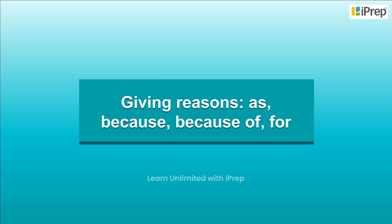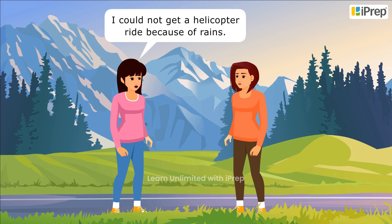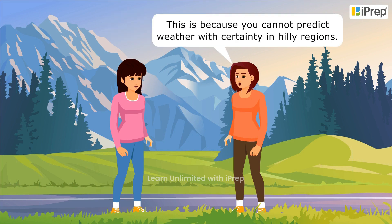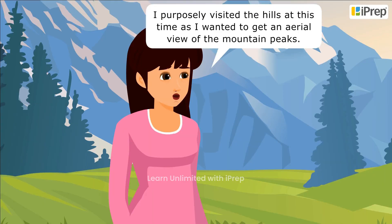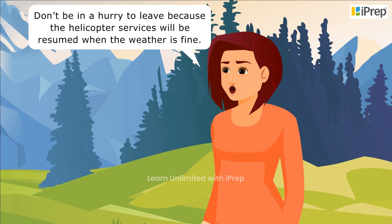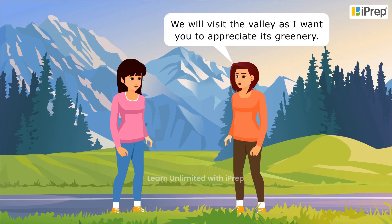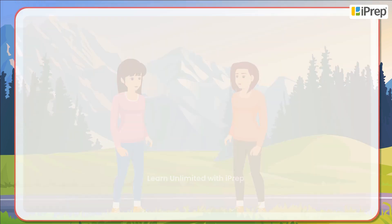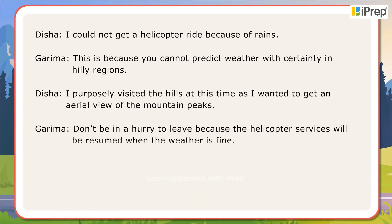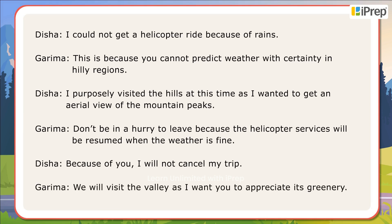We are giving reasons using 'because,' 'because of,' 'for,' and 'as.' I could not get a helicopter ride because of rains. This is because you cannot predict weather with certainty in hilly regions. I purposely visited the hills at this time as I wanted to get an aerial view of the mountain peaks. Don't be in a hurry to leave because the helicopter services will be resumed when the weather is fine. Because of you, I will not cancel my trip. We will visit the valley as I want you to appreciate its greenery. Let's look at this conversation between two friends using 'because,' 'because of,' and 'as' to give different reasons.